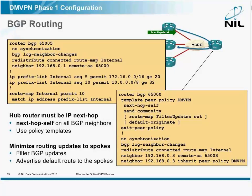What I'm doing is redistributing connected interfaces with a route map that uses a prefix list that matches my internal IP addresses. This configuration on the spoke router ensures that only internal prefixes will get redistributed into eBGP.